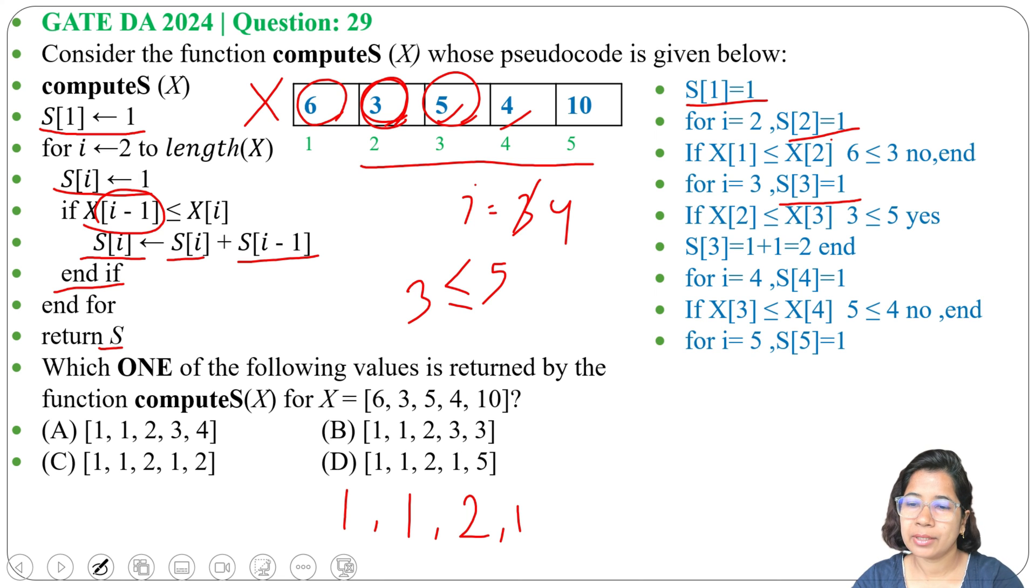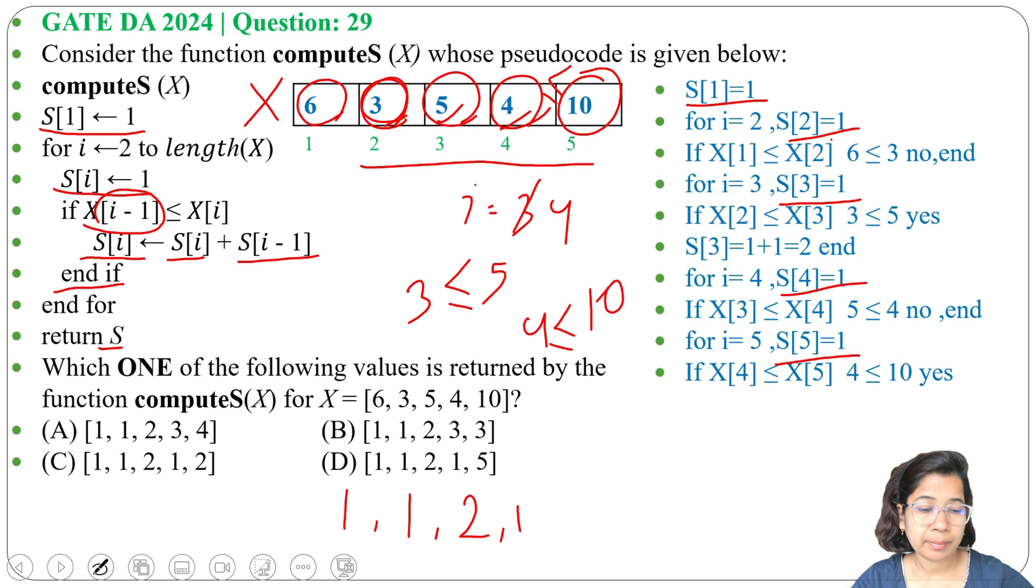Next, for i = 5, S[5] = 1. Then is X[i-1] ≤ X[i], means is 4 ≤ 10? Yes. That's why S[i], S[5] will be S[5] + S[4]. So S[5] value is 1, S[4] value is 1, it will be 1 + 1 = 2. And will return S, so return 2.